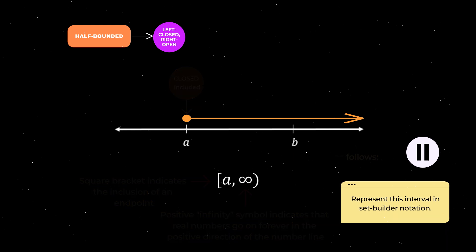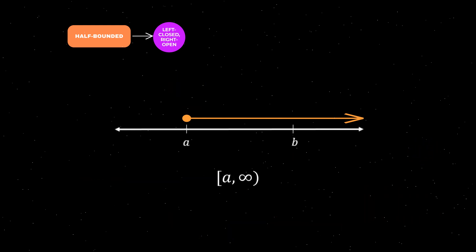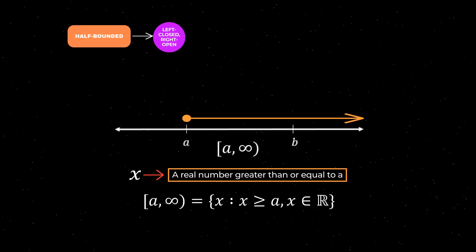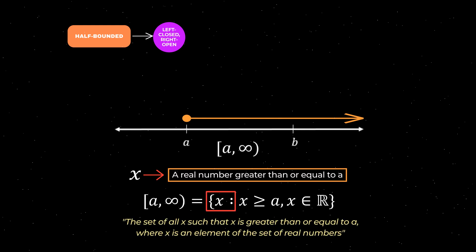To represent this interval in set builder notation, we first define a variable X as a real number greater than or equal to A, and then we build the number set using curly brackets as shown here. Therefore, this half bounded left closed right open interval in set builder notation can be described as the set of all X such that X is greater than or equal to A, where X is an element of the set of real numbers.